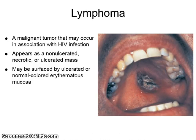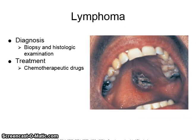Lymphoma is a malignant tumor that may occur in association with HIV infection. It appears as a non-ulcerated, necrotic, or ulcerated mass, and may be surfaced by ulcerated, normal-colored, or erythematous mucosa. Diagnosis is made by biopsy and histologic examination, and it is treated with chemotherapeutic drugs.